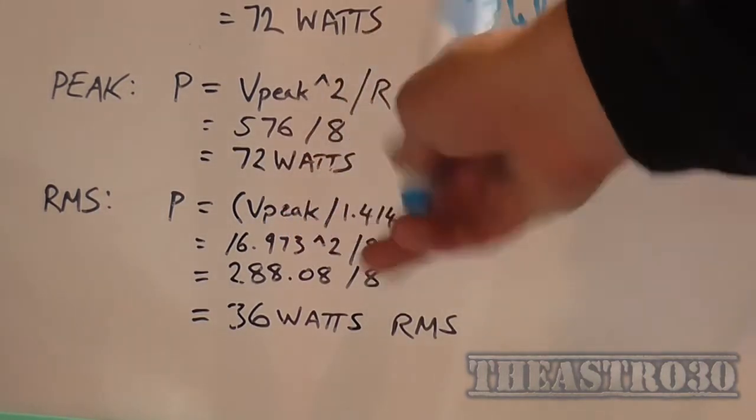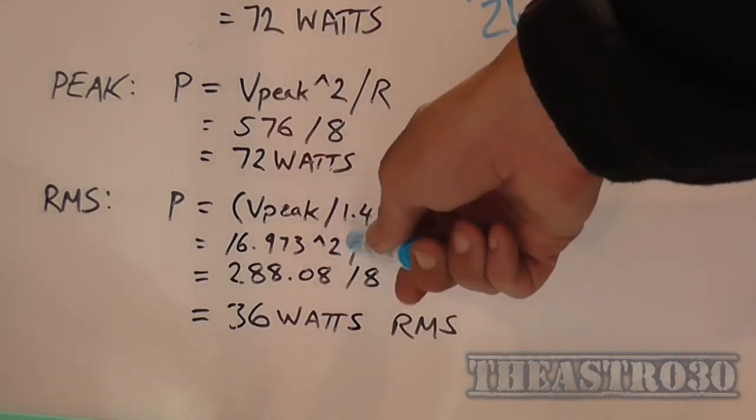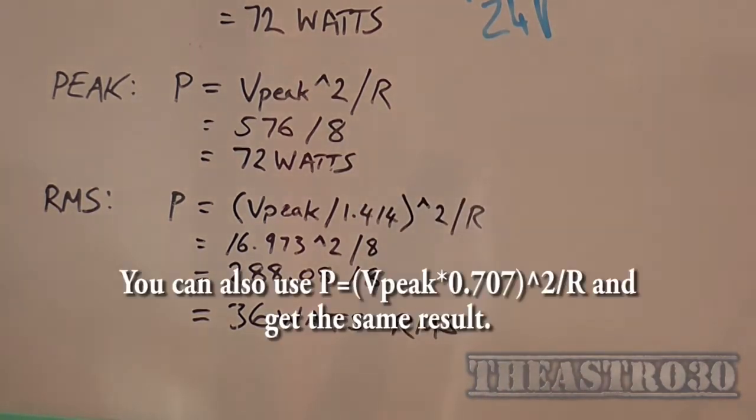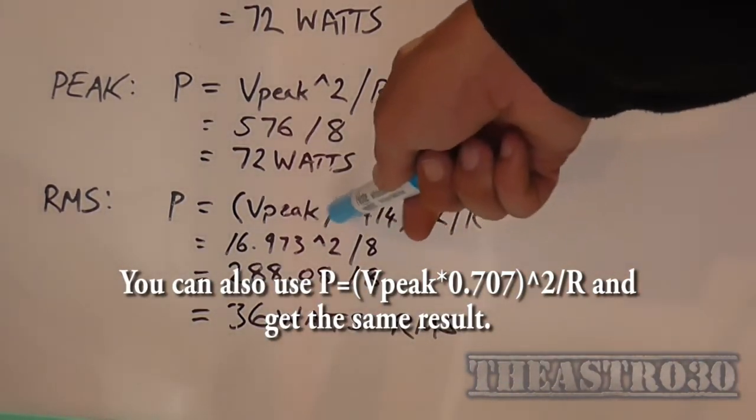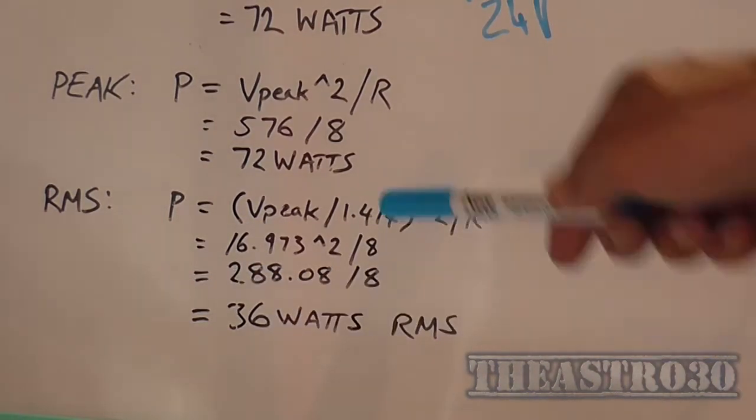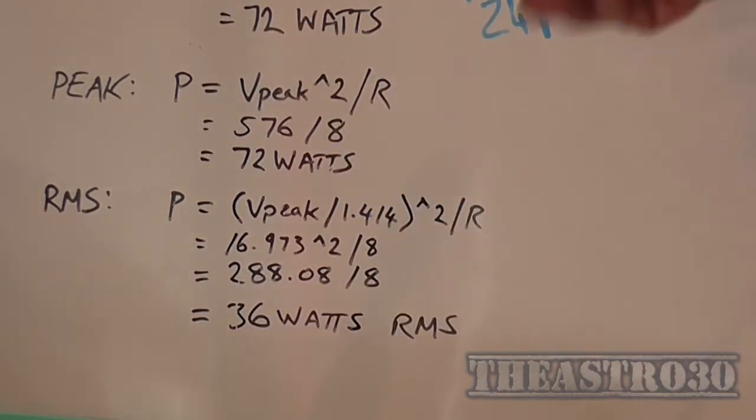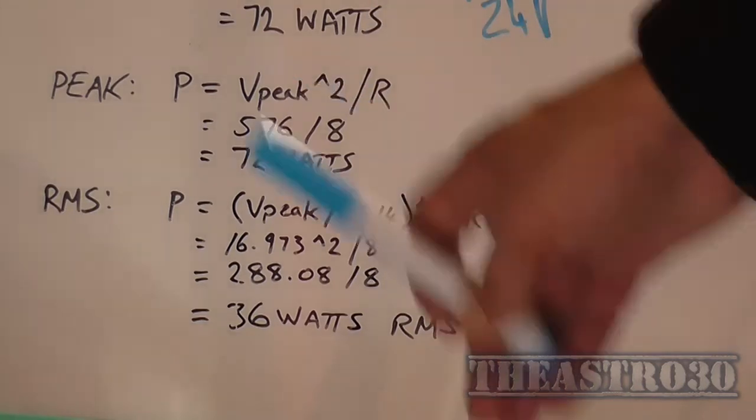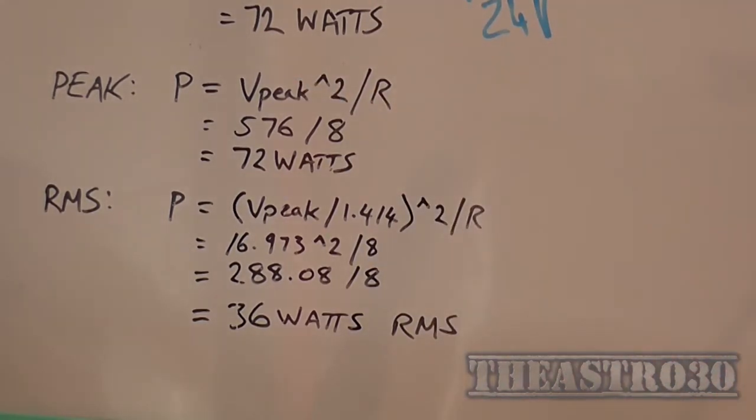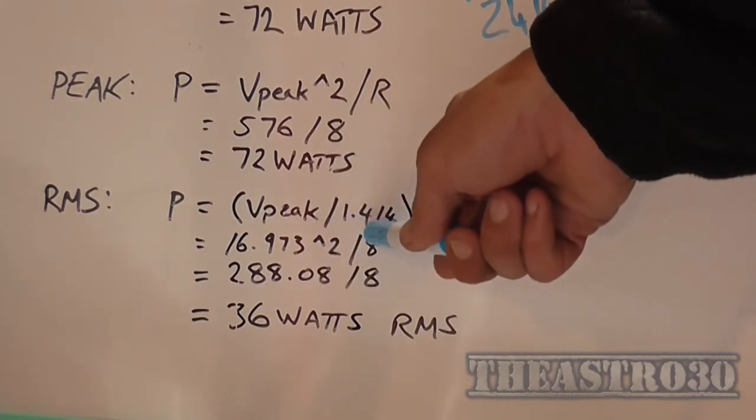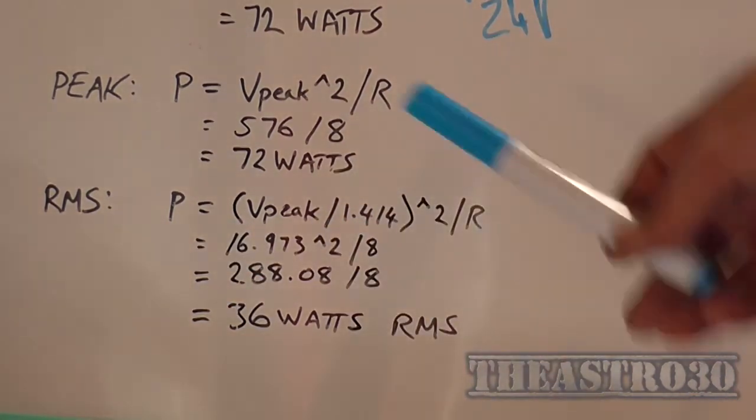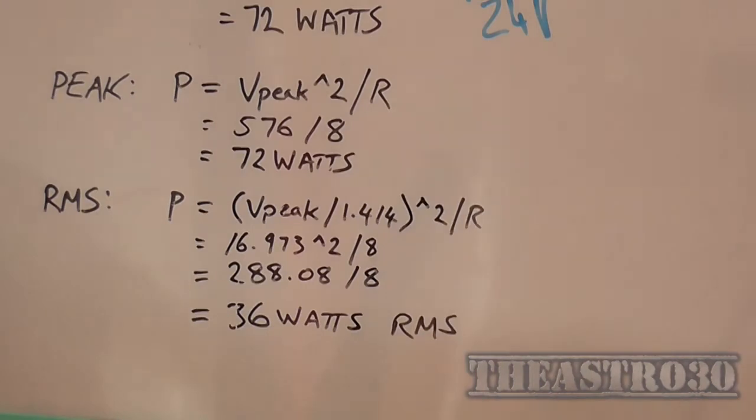You take your V peak again, which is 24 volts, divided by 1.414. Now, that is an interesting number. That's the same number we use to calculate AC to DC voltage through a bridge rectifier. Isn't that funny? It's the same figure. Anyway, it's V peak divided by 1.414, or to make it even simpler, just 1.4, to the power of 2.